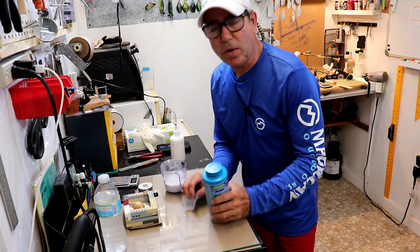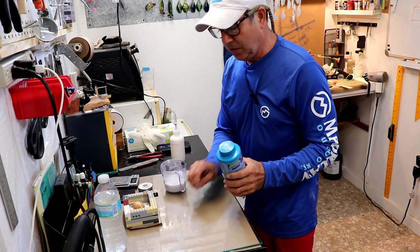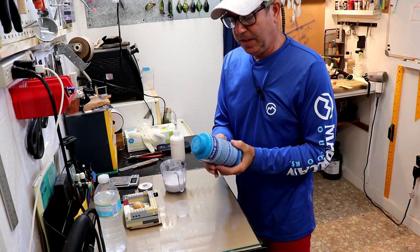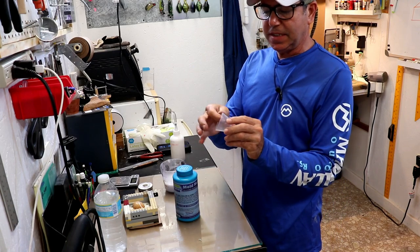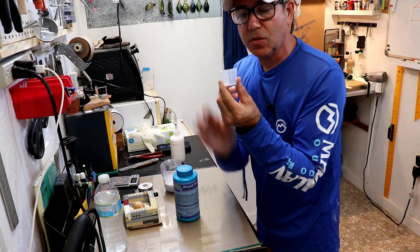All right so it's a 10 to 1 mixing ratio for the hardener to the silicone and this stuff needs to be shaken. So I'm going to pour out 10 milliliters in this little graduated cup. That should be pretty easy to do.